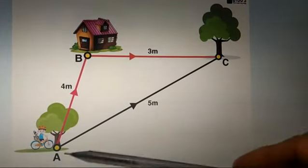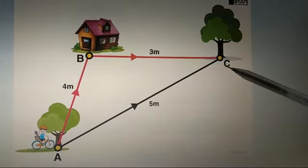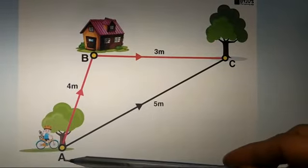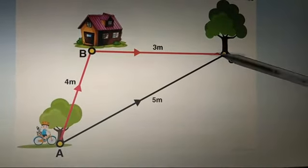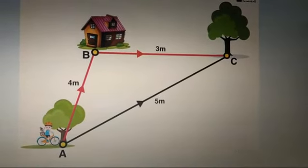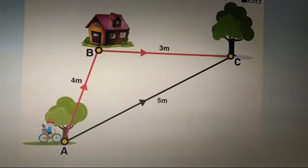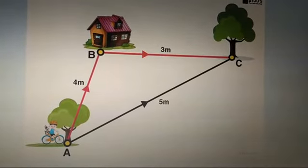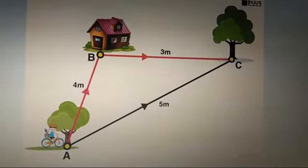Shortest distance from initial point to final point. So you have to take a scale and measure this distance. That is 5 meters. Now note here: displacement is 5 meters, distance is 7 meters. So displacement is smaller than distance.